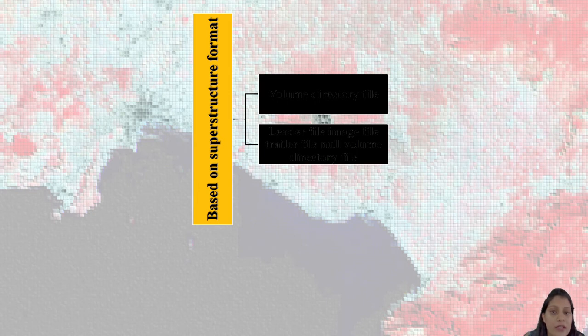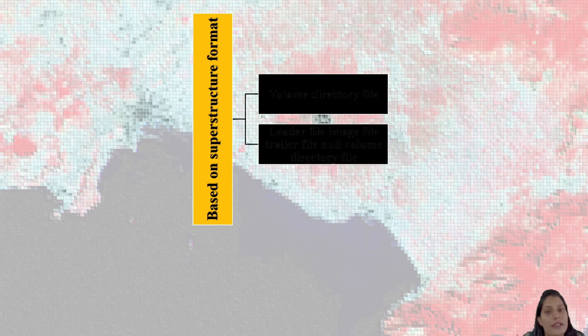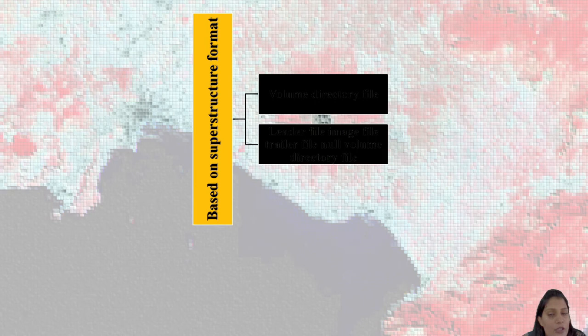Another format which is very super format is known as volume, director file, image file, trailer file, null image file. This is a superstructure format. Basically your data also considers this when you open a DVD. If you forget any of these components from the data, then data will not work.